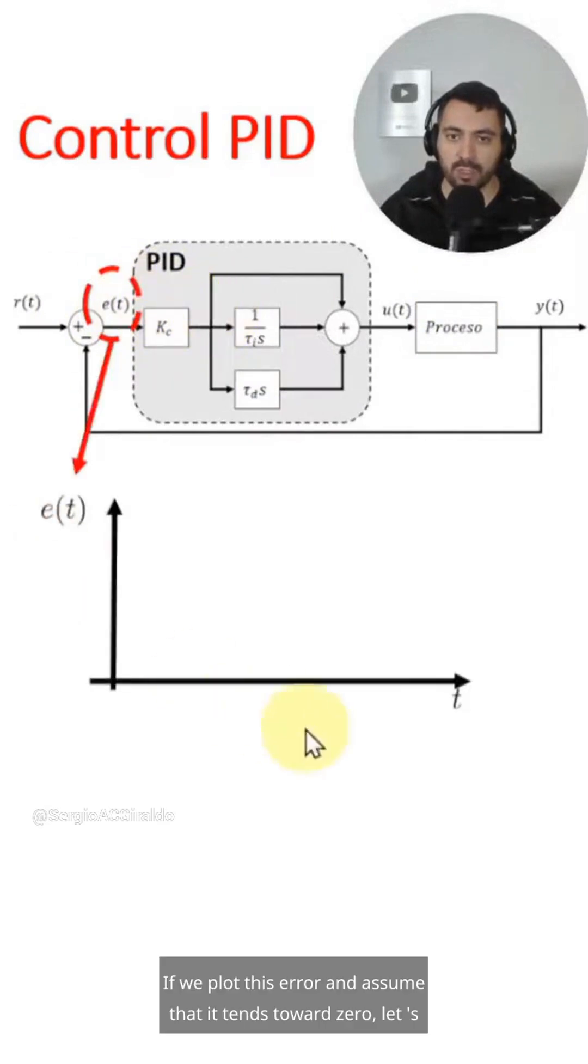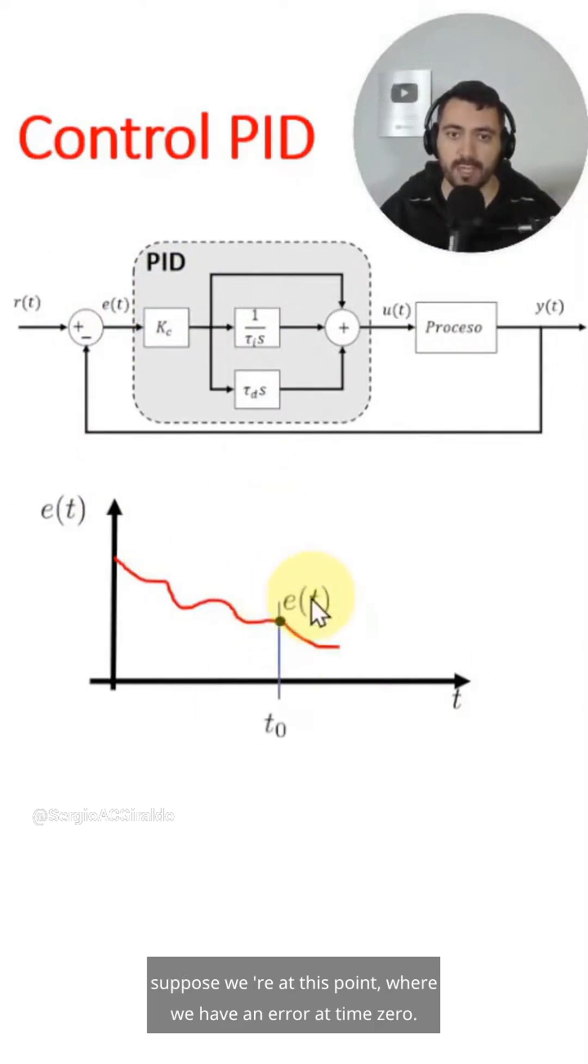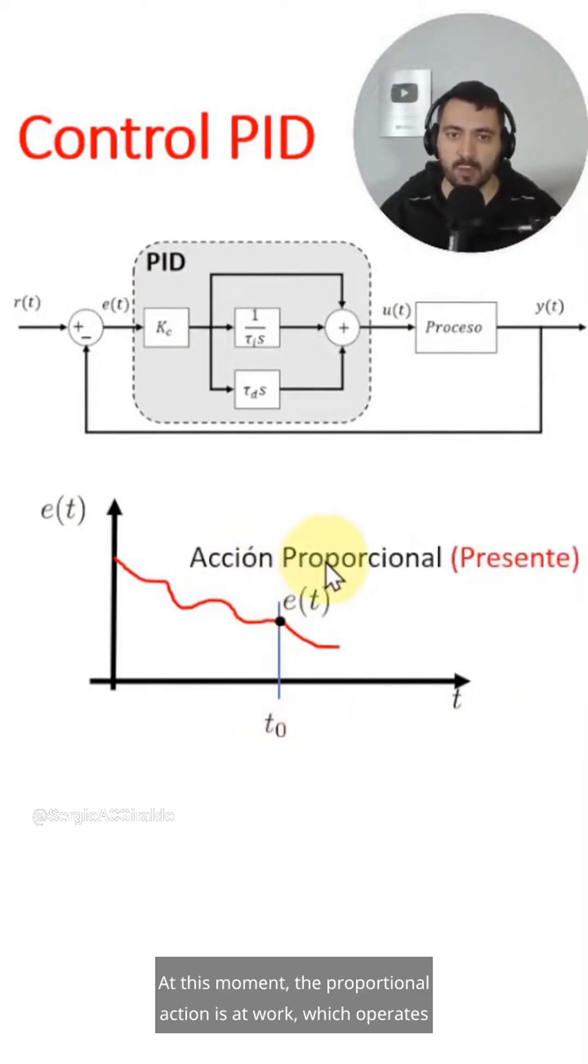If we plot this error and assume that it tends towards zero, let's suppose we're at this point where we have an error at time zero. At this moment, the proportional action is at work, which operates based on the present error, expressed in the Laplace transform as this equation.